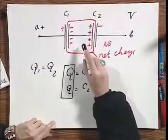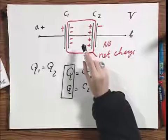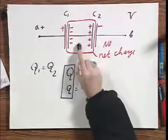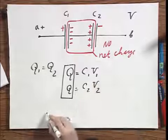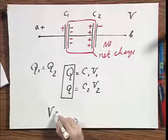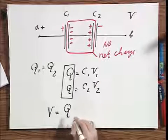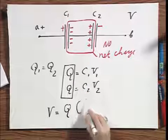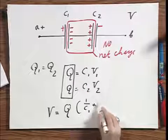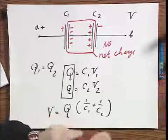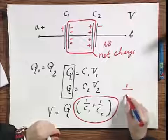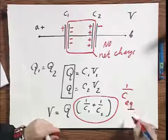So here, essential is that the Q is the same in each case, but not the potential difference. If you work this out, then you could easily show that V equals that Q times one over C1 plus one over C2.